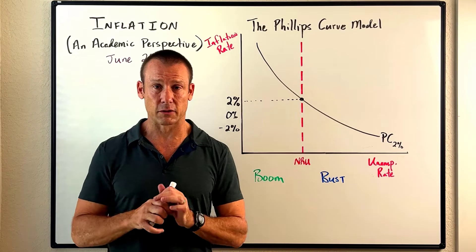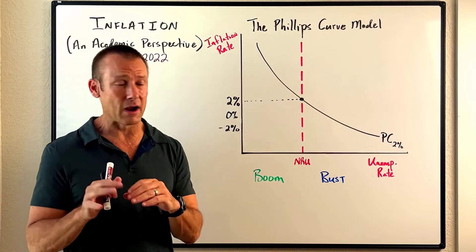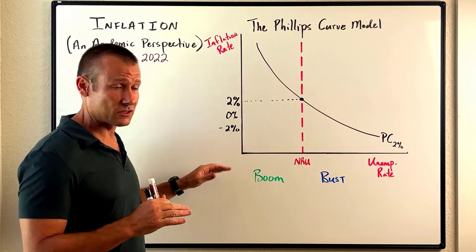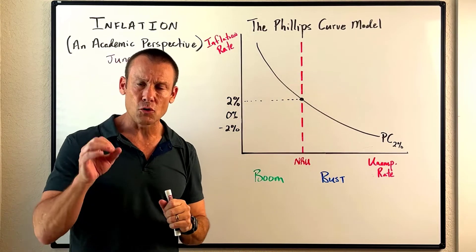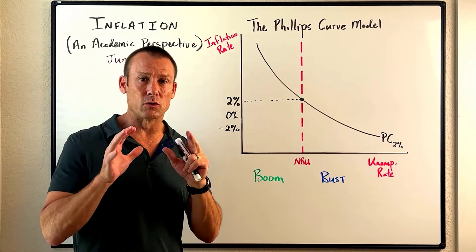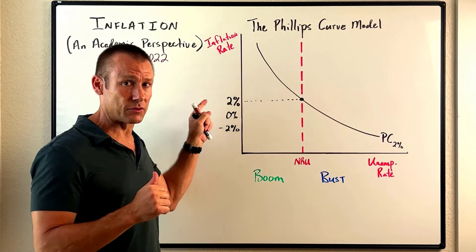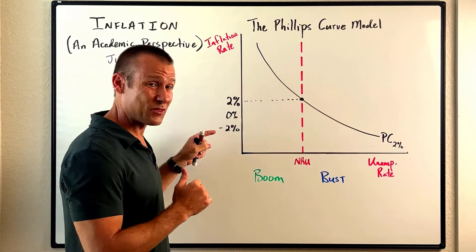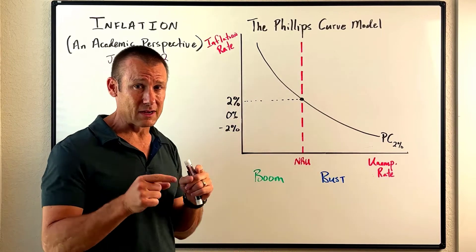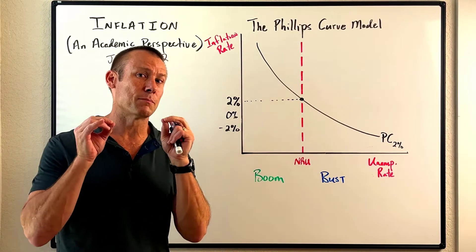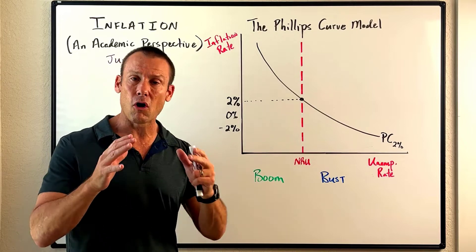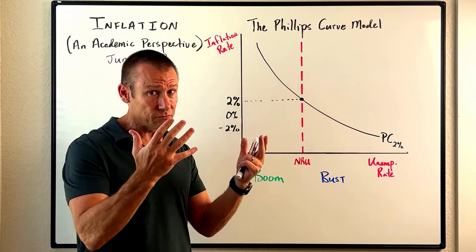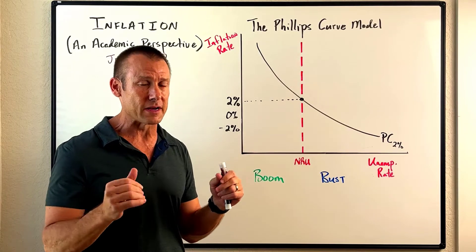Let's get to it — the Phillips curve. When we're looking at graphs, we want to look at the axes. On the vertical axis right here, we've got the inflation rate — the rate of change in prices — which is a really good thing about the Phillips curve model. It's kind of an advantage over the AS/AD model: we've got the rate of change in prices. In the AS/AD model, we just had the price level on the vertical axis, and all it could basically show us is the price level rising, which is inflation, but not the rate of change — not the inflation rate.